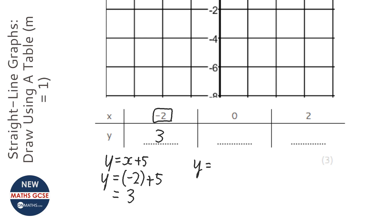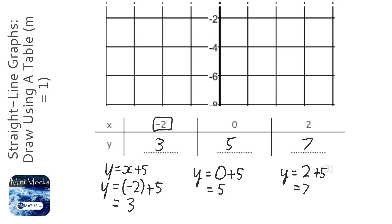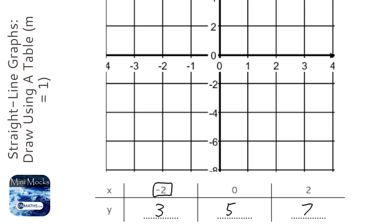So y = 0 + 5, which is just 5. And then lastly, y = 2 + 5, which is 7. So we've got our three points there.